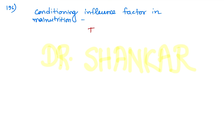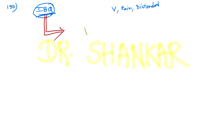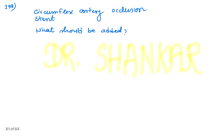Question number 196: the conditioning influence factor for malnutrition — according to national-level faculties, the answer is infections. Another image-based long clinical scenario question showed features of vomiting, abdominal pain, distension, and free gas in the peritoneal cavity on imaging — this is hollow viscous perforation, which is the correct answer.